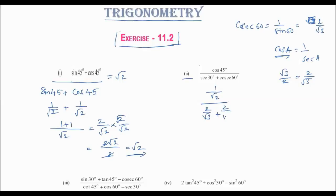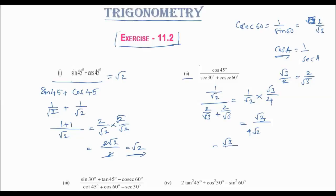So we get 1/√2 × (2/√3 + 2/√3) = 1/√2 × 4/√3 = 4/(√3·√2). Simplifying: the answer is √3/(4√2).